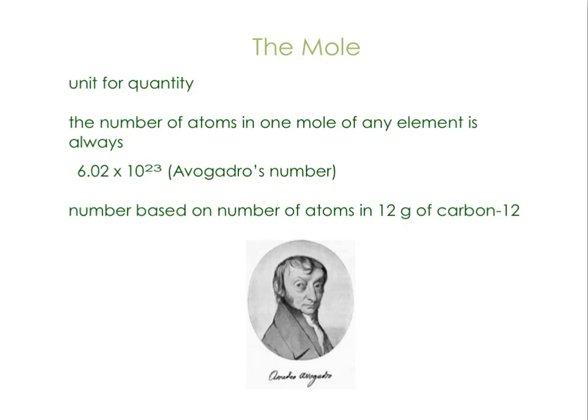When we use the mole, we are usually talking about the number of atoms or molecules. The number of atoms or molecules in one mole is always 6.02 times 10 to the 23rd. This is referred to as Avogadro's number, named in honor of him. This is an experimentally determined number based on the number of atoms in 12 grams of carbon-12.